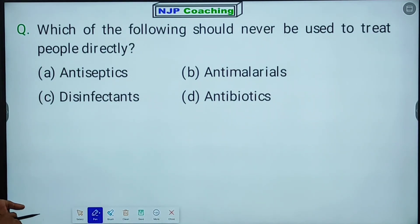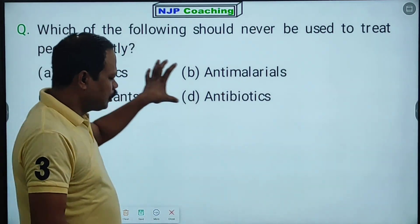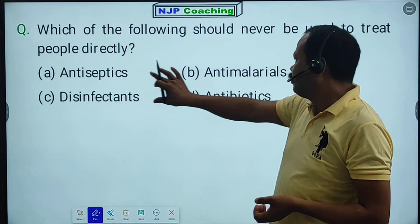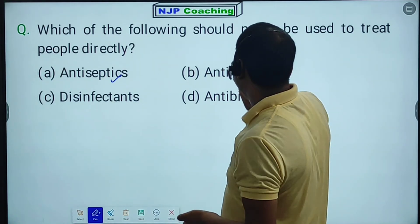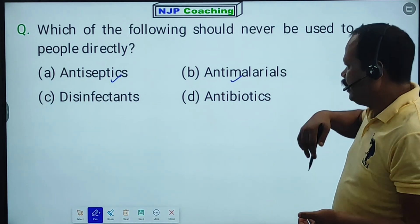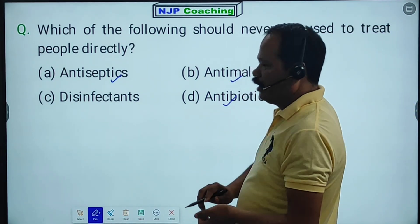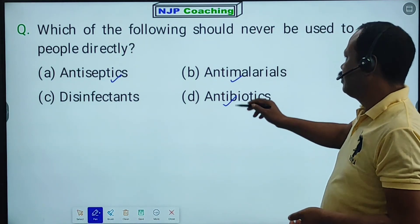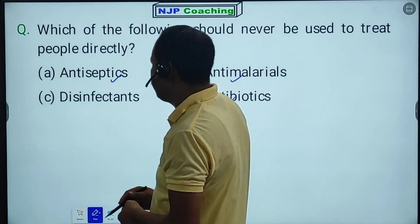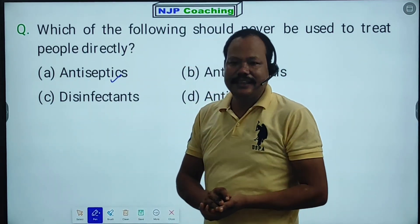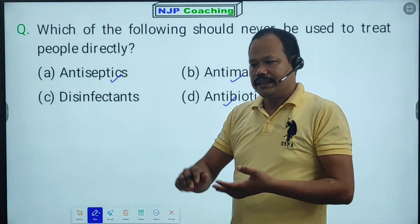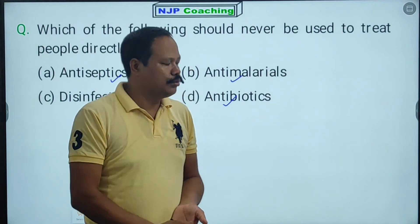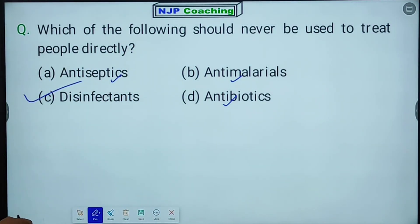Which of the following should never be used to treat people directly? Antiseptics are applied to skin, anti-malarials are taken as tablets orally, and antibiotics are taken orally. Disinfectants are used on surfaces like toilets and floors — they should never be used directly on people. So the answer is disinfectants.